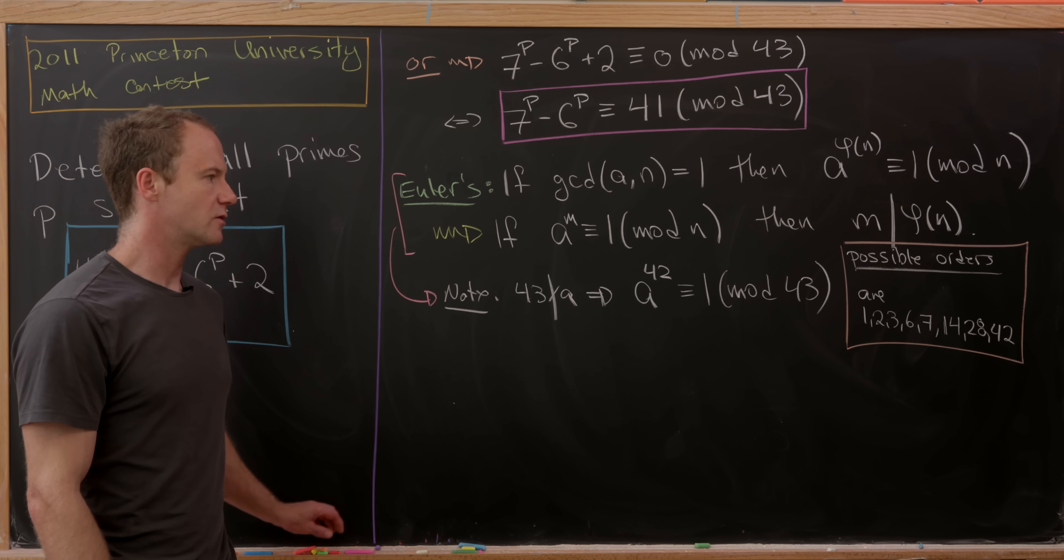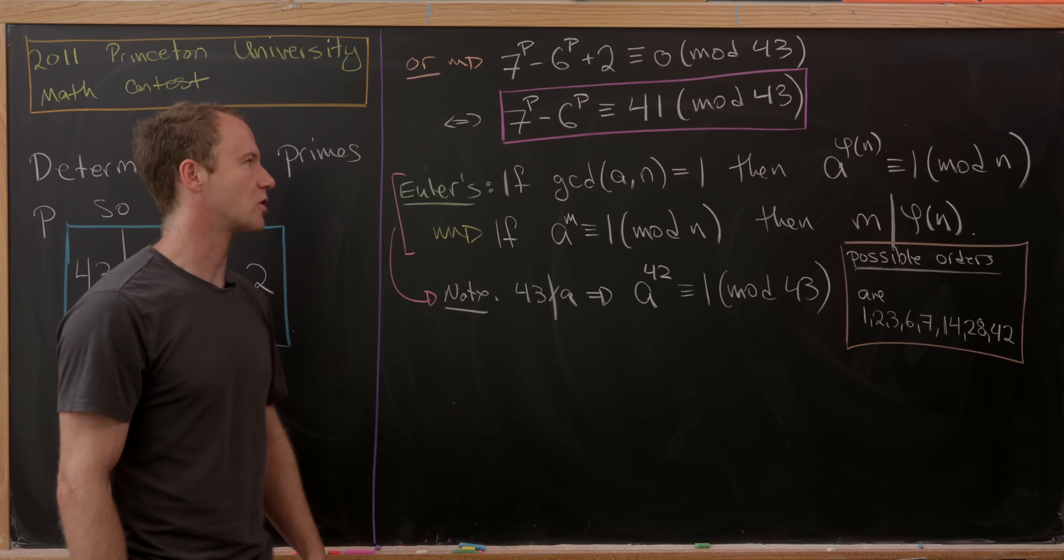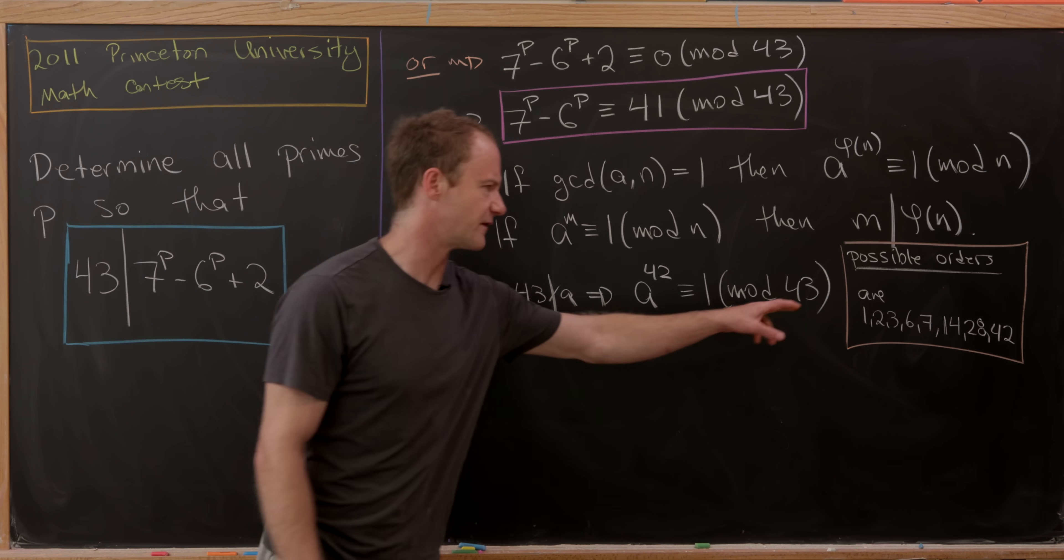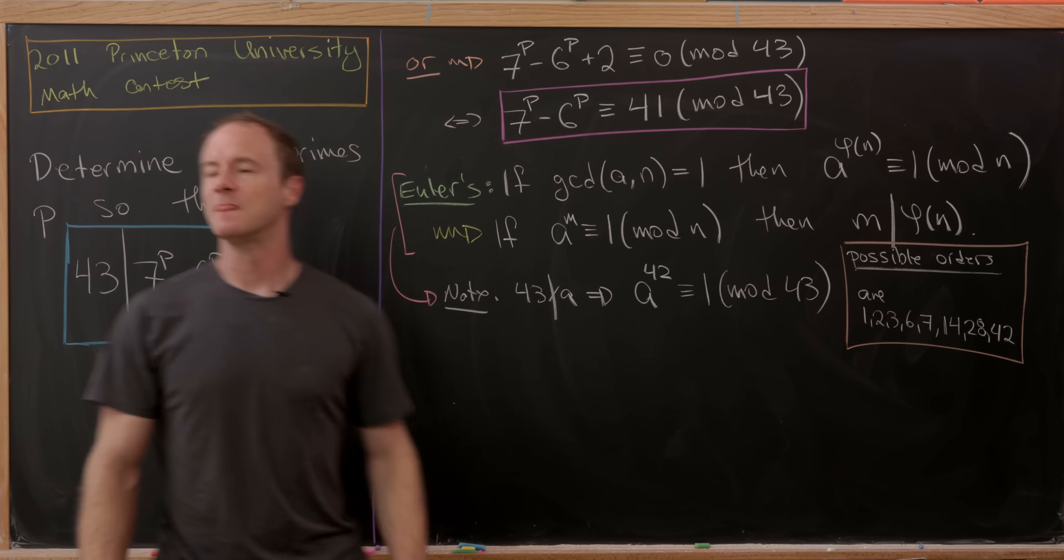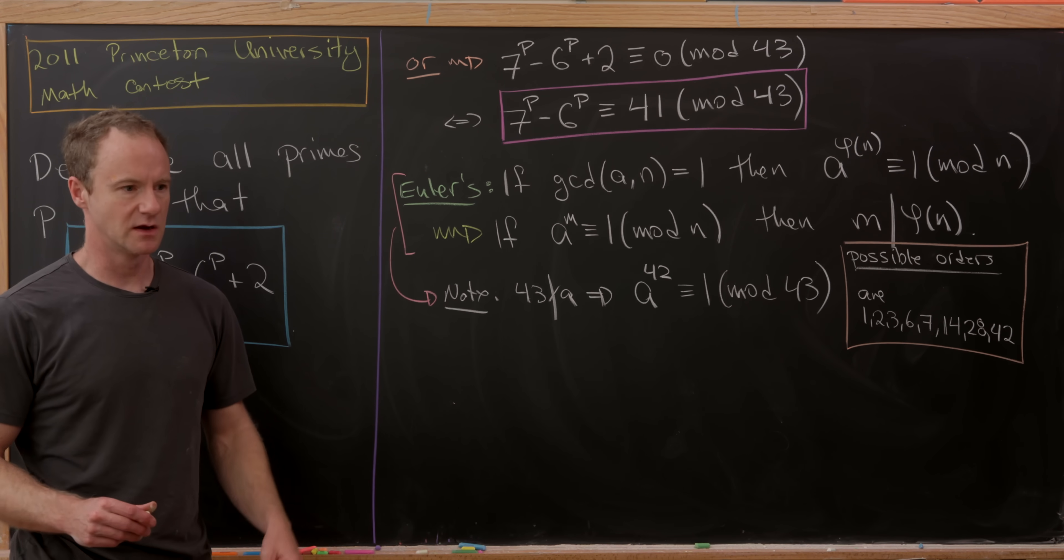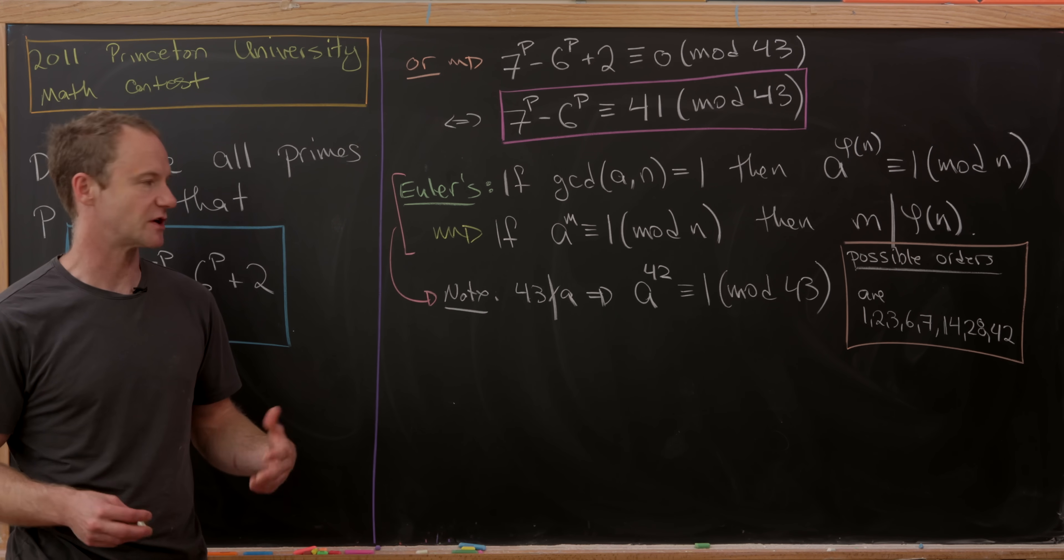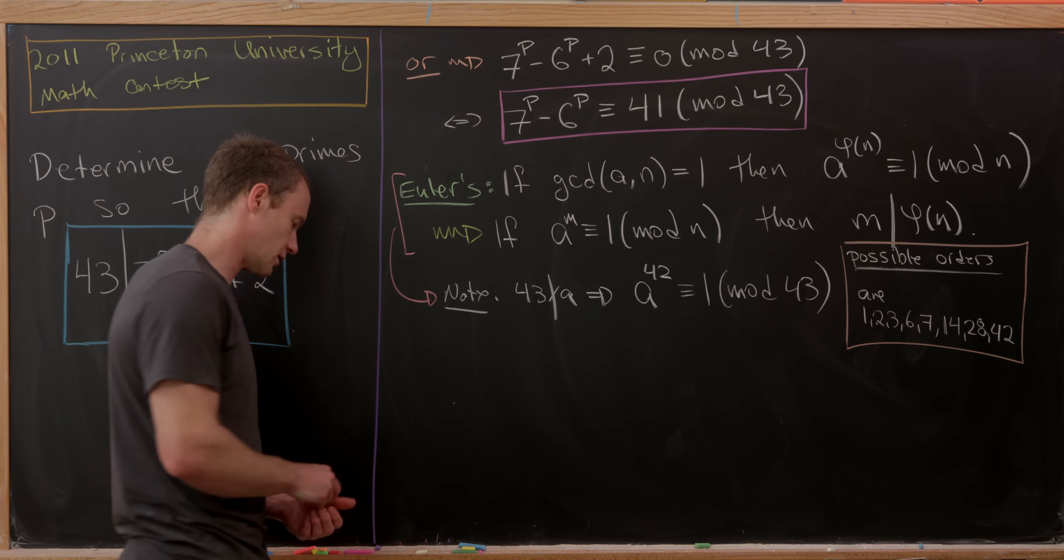That means we should find the order of 7 and the order of 6 modulo 43. We don't have to go very far because those numbers are relatively small. Since this is part of a math contest where you have limited time and we're not really testing computational skill, mostly just problem-solving skill, the orders are probably fairly small.